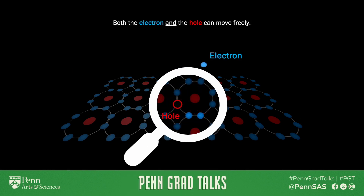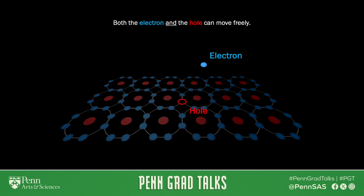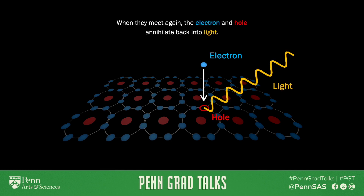How does a hole move? Well, if a nearby electron jumps into this hole, it leaves behind a new hole. And if that keeps happening over and over again, essentially you just have a hole moving left to right because electrons are moving from right to left. So physicists treat the hole as if it's the opposite of the electron, and it moves around as if it's its own entity. And then finally, when the electron and hole meet up again, the electron jumps back into the hole and gives back the light that freed it in the first place.